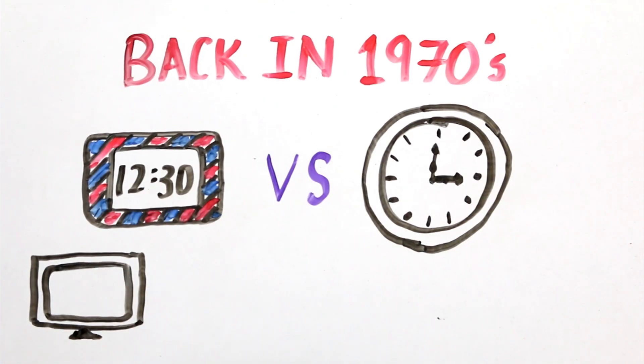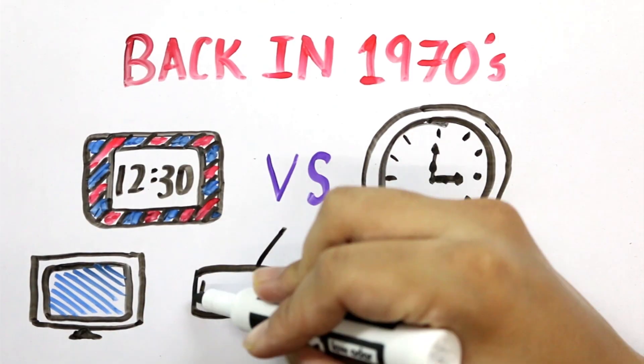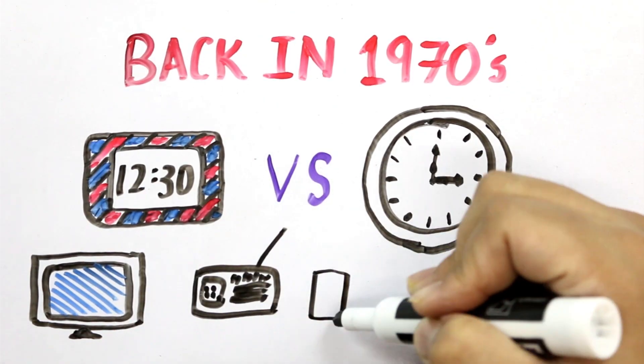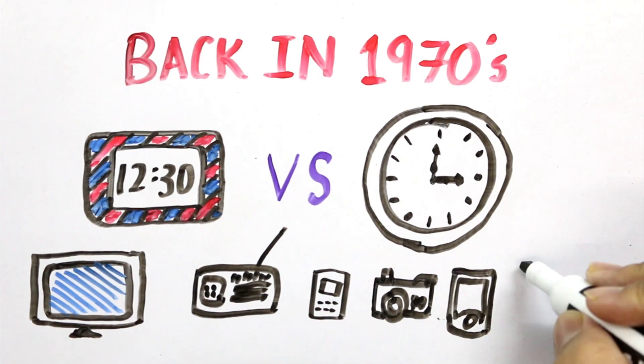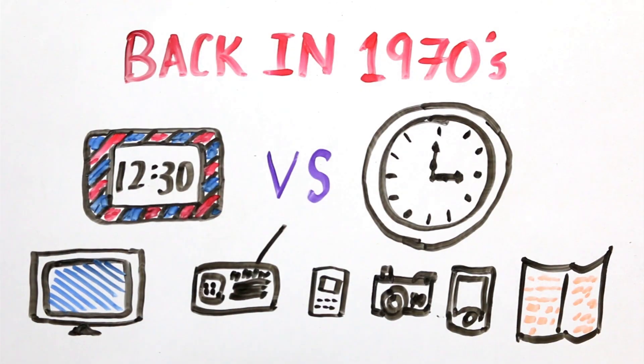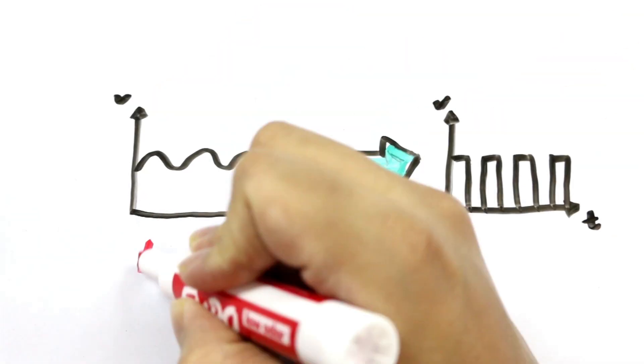Since then, we have got more used to the idea of digital technology. Now pretty much everything seems to be digital, from television and radio to music players, cameras, cell phones and even books. It's easy to convert analog information into digital.